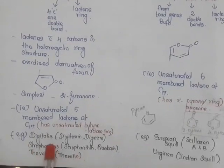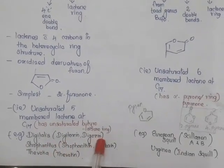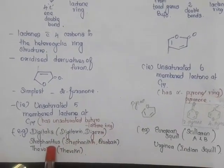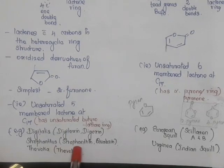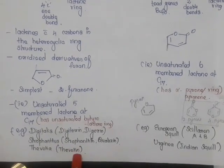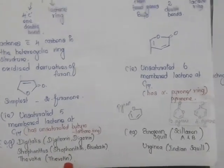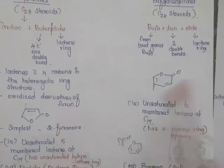Examples of cardinolides are digitalis glycosides — digitoxin and digoxin. For strophanthus, the example is strophanthin and ouabain. For Thevetia, it is thevetin.